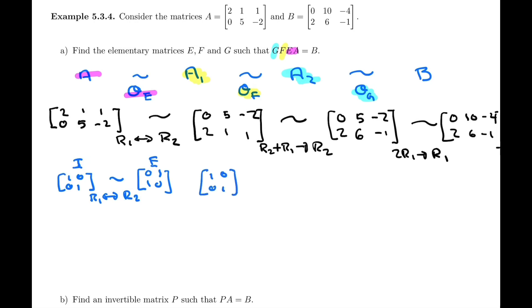And then we do the same thing with the second operation, 1, 0, 0, 1. And we apply row 2 plus row 1 becomes row 2. And that, so row 2 plus row 1, so 1, 0, 1, 1, that will be matrix F.